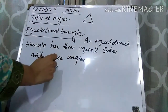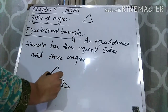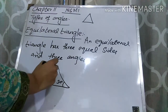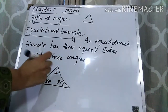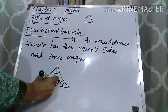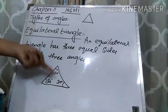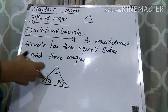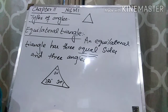Let's suppose this is an equilateral triangle. If this angle is 50 degrees, then this is also 50 degrees, and this is also 50 degrees. All three sides are equal and all three angles are equal, so we say that this is an equilateral triangle. Remember: if sides are equal, it means angles are equal, and if angles are equal, it means sides are also equal. An equilateral triangle has three equal sides and three equal angles.